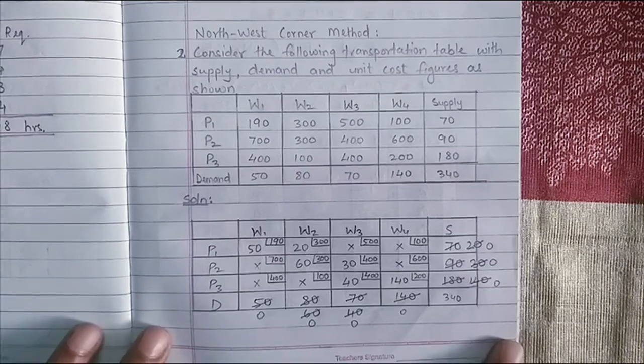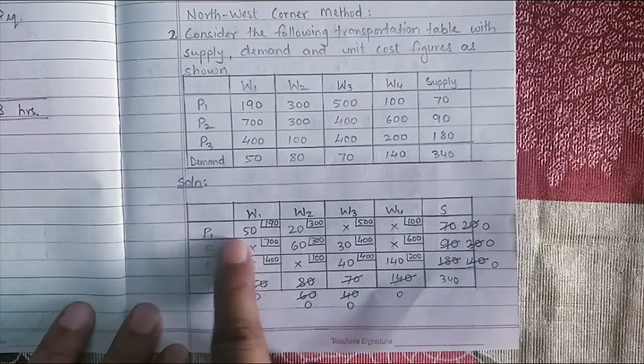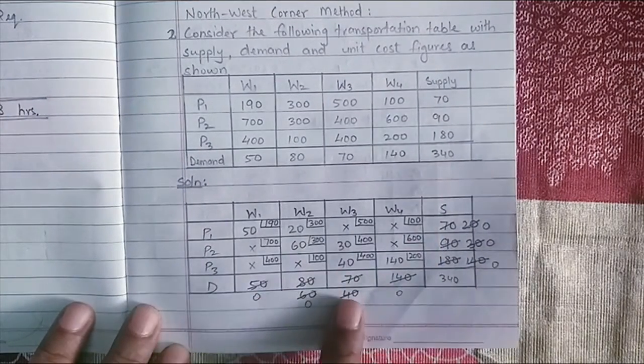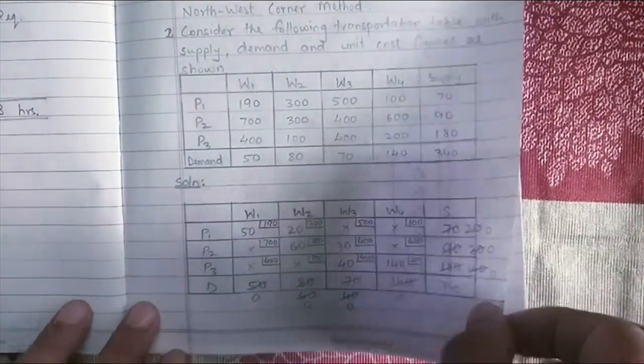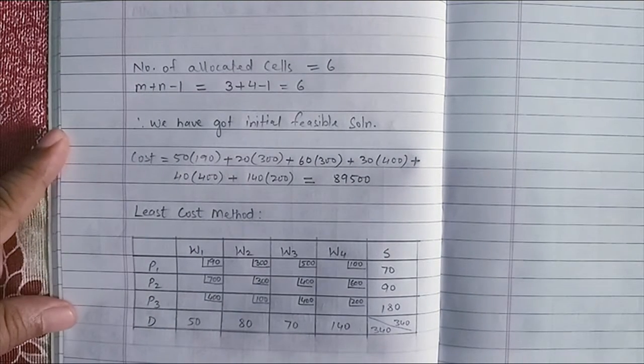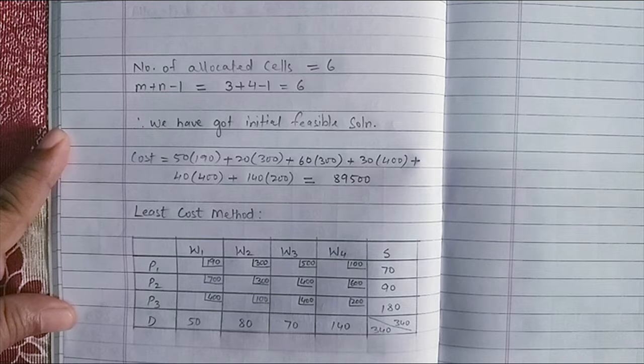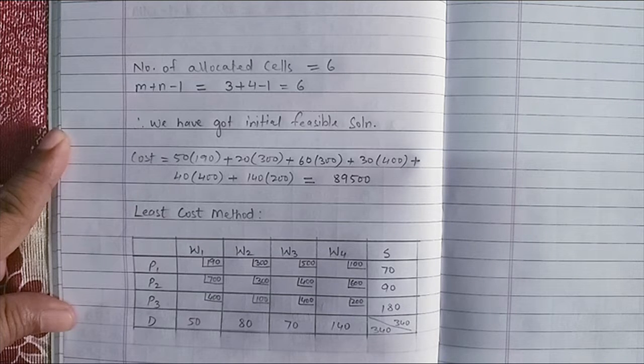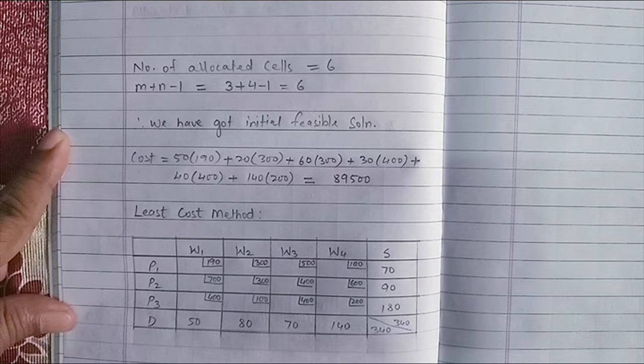we have solved the transportation problem to find the initial feasible solution using the north-west corner method. And this was the solution. We had got the allocations and we checked the number of allocated cells which was 6, and it was same as m plus n minus 1 which is 3 plus 4 minus 1, and therefore we had got initial feasible solution and then we calculated the total cost which came to 89,500.